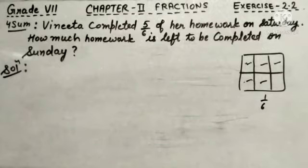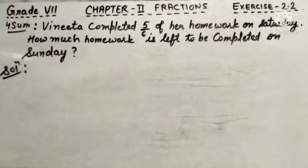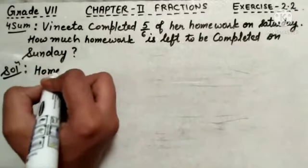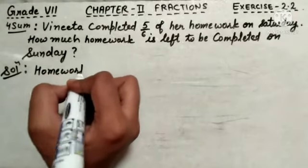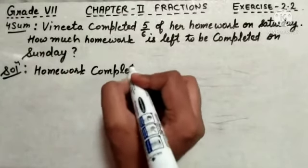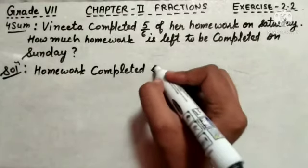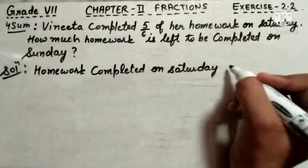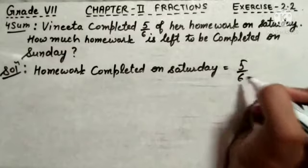But, how we can write this sum that we will see here. So, now let's start the solution. What we are going to write? Homework completed on Saturday is equals to 5 upon 6.